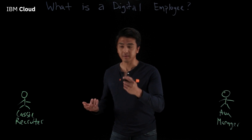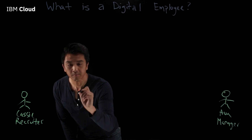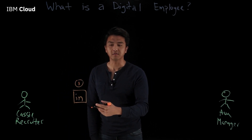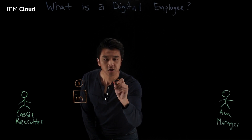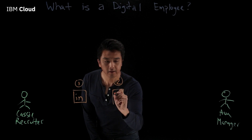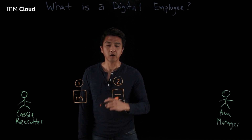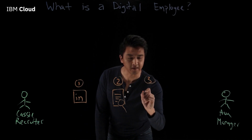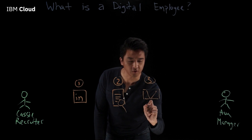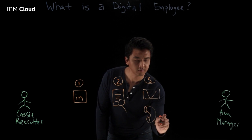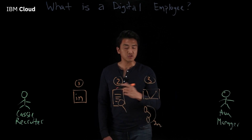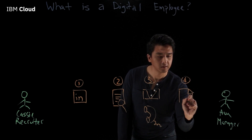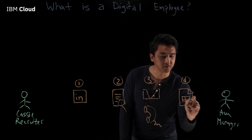Her typical workflow looks something like this. She starts by using LinkedIn Recruiter to search for and find the right candidates for the job. She then goes through the search results and finds matching candidates that are qualified. She then messages these candidates and schedules a screening interview to make sure they are the right match for Ava. Finally, when she has the right shortlisted candidates, she compiles that list into a spreadsheet so that Ava can proceed to the next step.